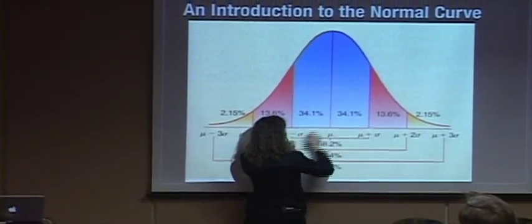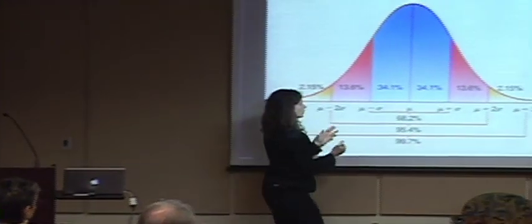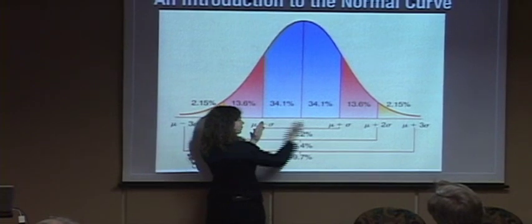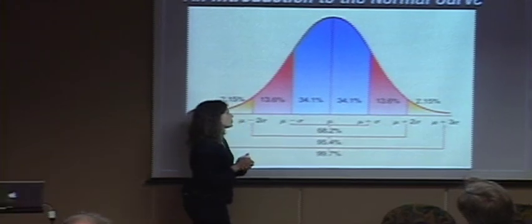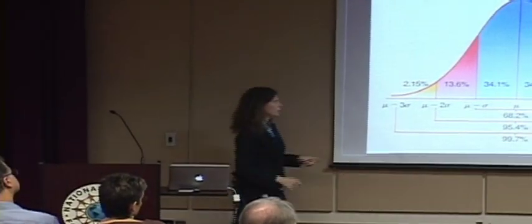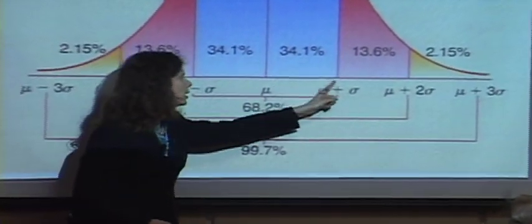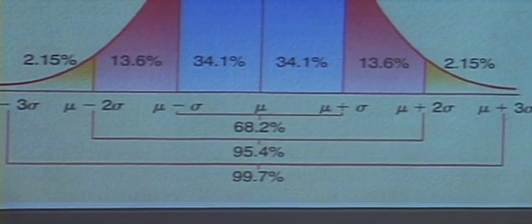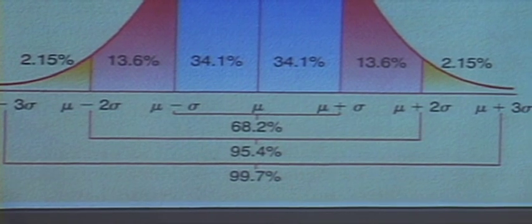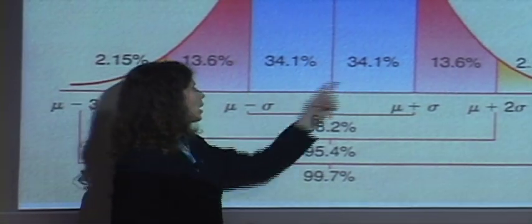These percentages here are telling you what percent of the people are in that distance from the average. For example, if you ask how many people have an IQ between this value and this value, you would say it's 34.1% plus 34.1%. That sigma value — the distance between mu and mu minus sigma, and also between mu and mu plus sigma — is what's called a standard deviation. So if we say what percentage of people have an IQ within one standard deviation of the mean, the answer on a normal curve would be 68.2%.